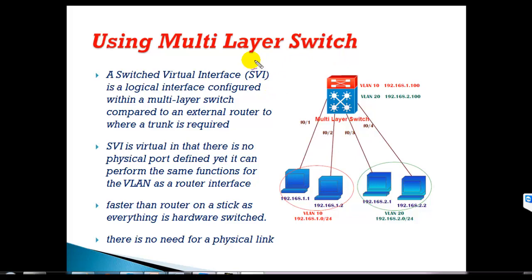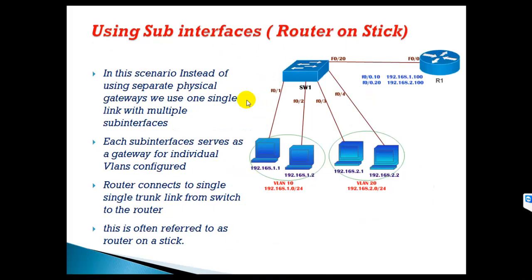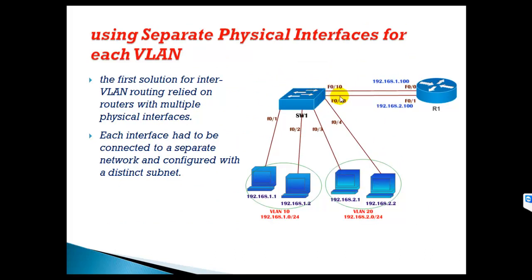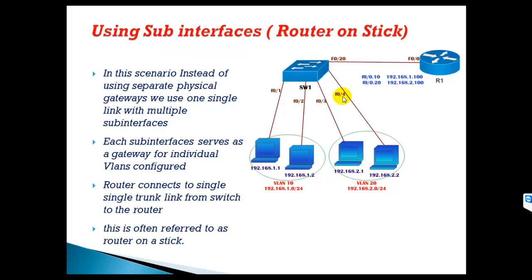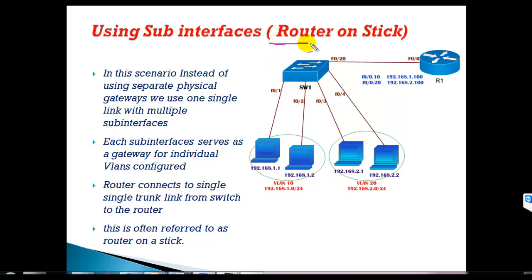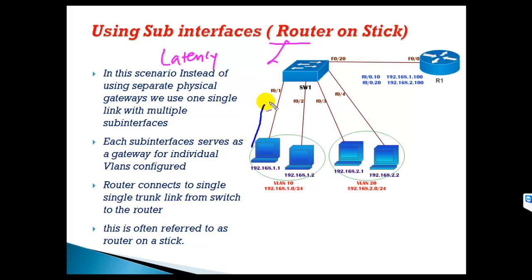The major drawback with the previous router-on-stick method: initially we used separate physical interfaces for each VLAN, then we moved to sub-interfaces so one physical interface could serve multiple VLANs, reducing cost. But there was still a major concern with latency. Packets arrive at the switch at wire speed because switches forward in hardware.